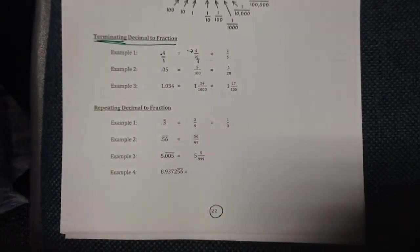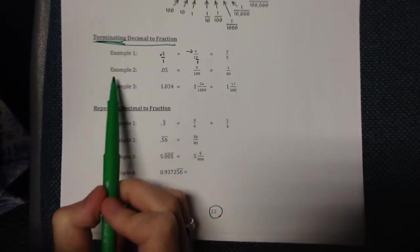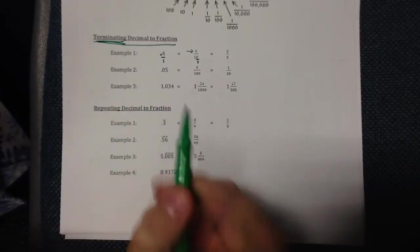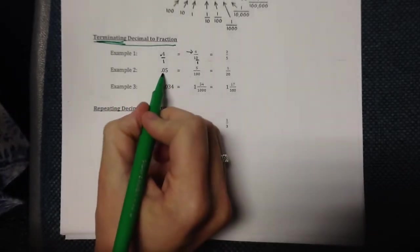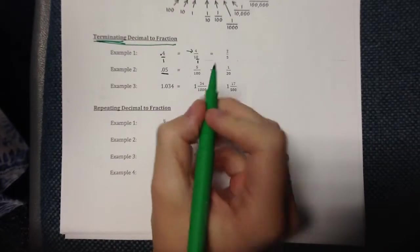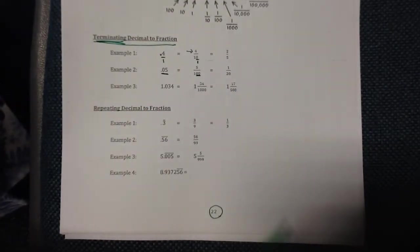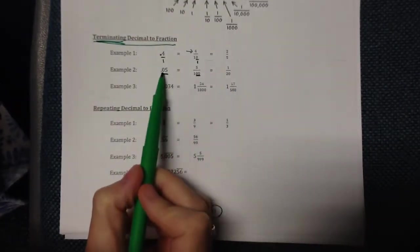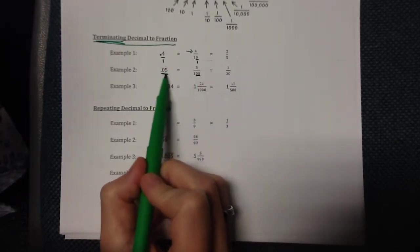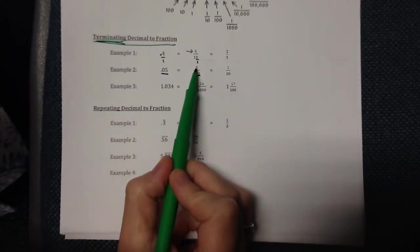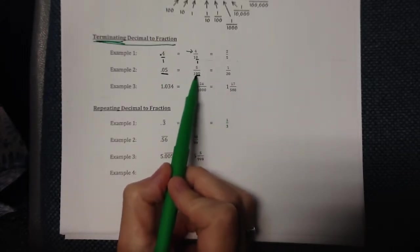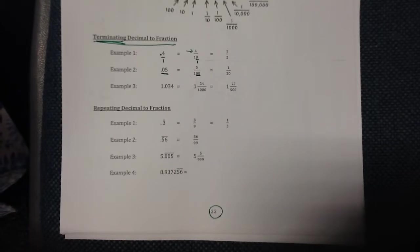Here's example number two. Notice there are two numbers after the decimal, so we put two zeros under our fraction. This is the tenths-hundredths place. Since this number is in the hundredths place, we put the number five over one hundred.